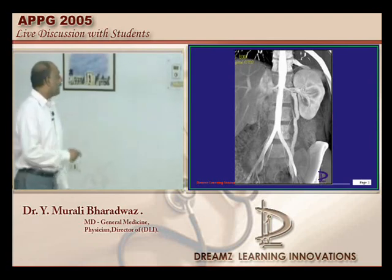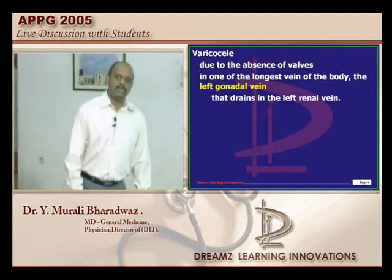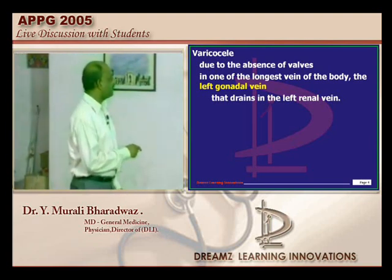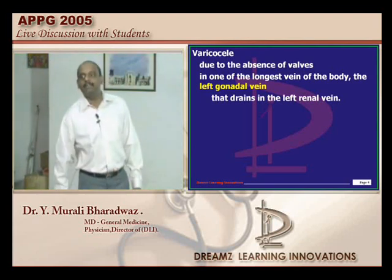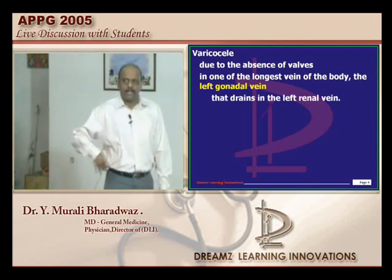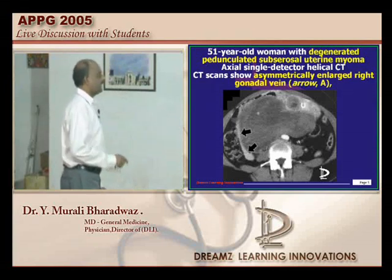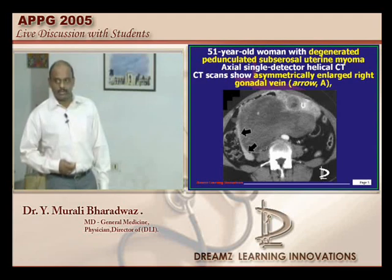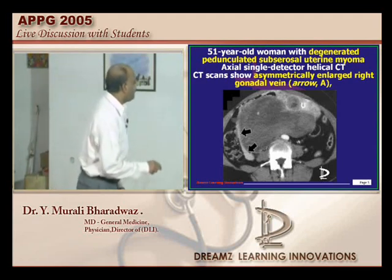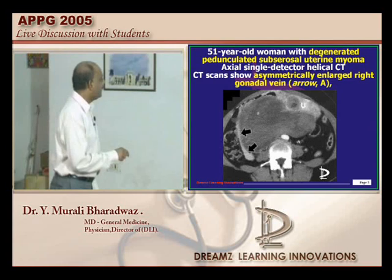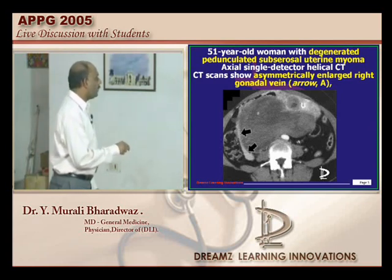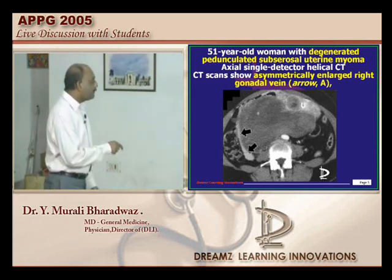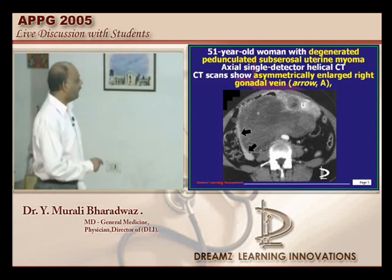This MR picture gives you a complete appearance. Varicocele is basically due to the absence of valves in one of the longest veins of the body — the left gonadal vein draining into the left renal vein. Commonly, if there is a co-existent renal cell carcinoma, it can present with varicocele. Even in female genital tract malignancies, the gonadal vein is very important. This shows a pedunculated subserosal uterine myoma with arrows pointing to the gonadal vein.